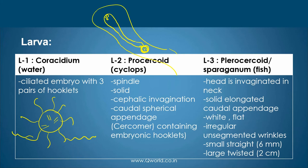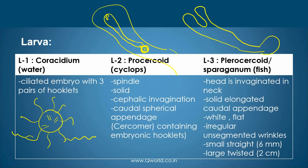The plerocercoid larva is almost the same with some differences: the head is totally invaginated and it is solid. It also has a caudal appendage. It is white, flat, and unsegmented with a wrinkled body. It is available in two forms: a small form up to 6 millimeters, and a larger form up to 2 centimeters. These are usually found in fish. So: the first larval stage, coracidium, is found freely in water; the second larval stage, procercoid, is found in cyclops; and the third larval stage, plerocercoid larva, is found in fish.